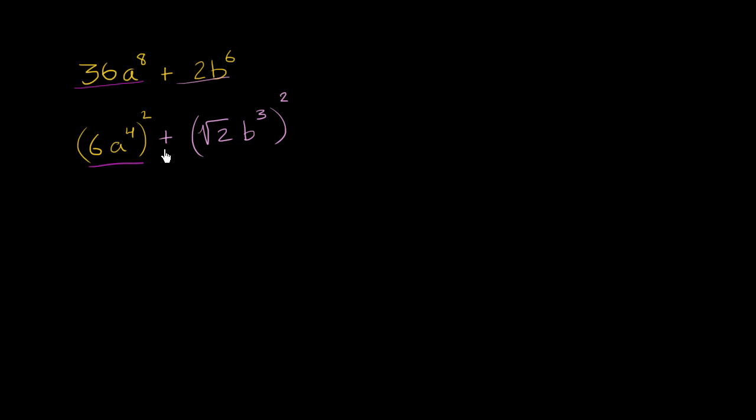Now, we wanted to write it as a difference of squares. So instead of writing it this way, let's get rid of this plus. I could write it as subtracting negative 1 times that. And negative 1, we know, is the same thing as i squared.